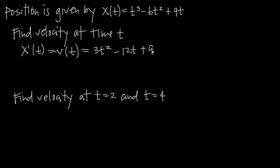So if we wanted to find velocity at any time, all we would do is plug that value for time into the velocity function. When it's asking us to find velocity at time t, it's just saying model the velocity at any time, which is just the velocity function v of t.